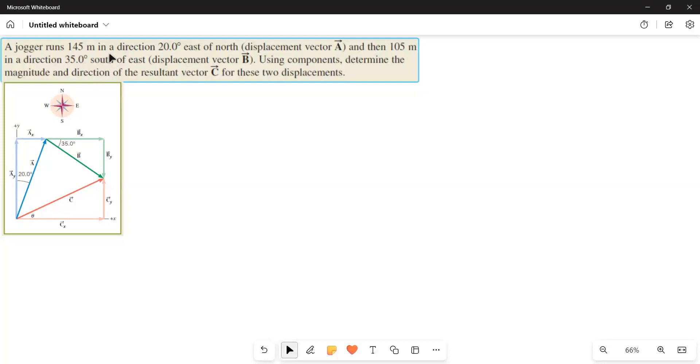A jogger runs 145 meters in a direction 20 degrees east of north and then 105 meters in a direction 35 degrees south of east. Using components to determine the magnitude and direction of the resultant vector C bar for these two displacements.